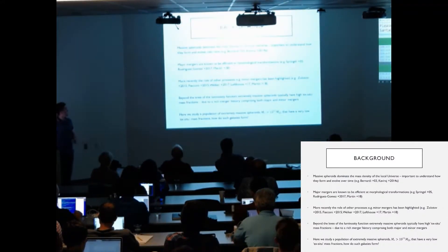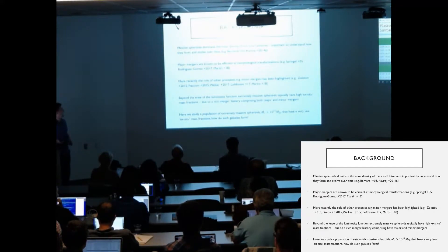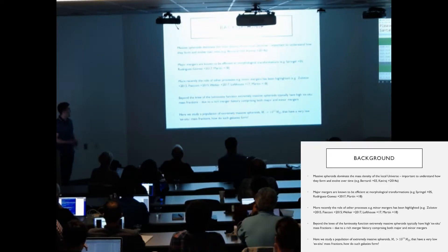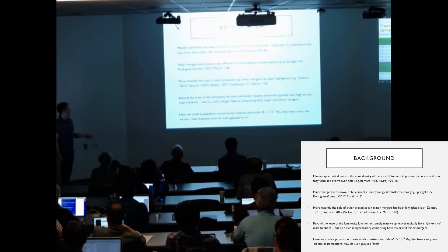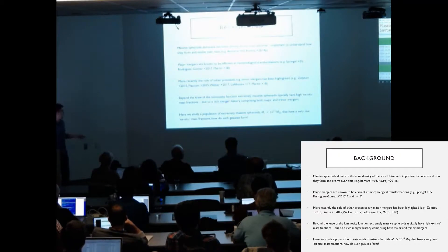So a bit of background first. Massive spheroids dominate the mass density of the local universe, so it's therefore pretty important to understand how they form and evolve over time. Major mergers are known to be very efficient at causing morphological transformations, and so it's natural to assume that they cause the formation of these spheroids. More recently though, the role of other processes, for example minor mergers, have been highlighted at their effect of being able to cause morphological transformations.